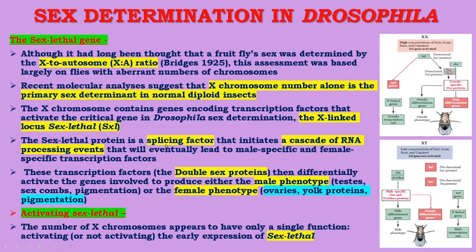The Sex lethal protein is a splicing factor that initiates a cascade of RNA processing events that will eventually lead to male-specific and female-specific transcription factors. These transcription factors — the Doublesex proteins — can differentially activate the genes involved to produce either the male phenotype (testes, sex combs, pigmentation) or the female phenotype (ovaries, yolk proteins, pigmentation).